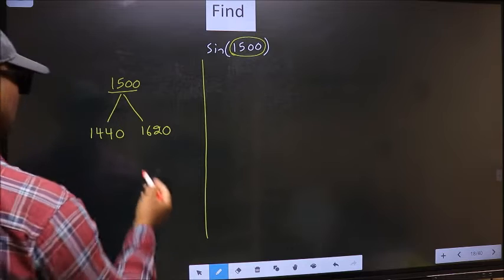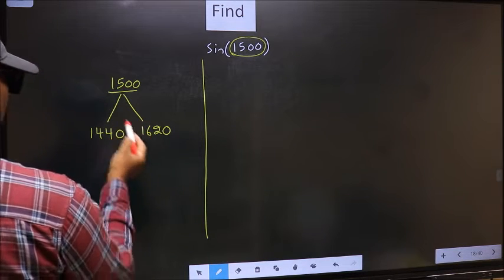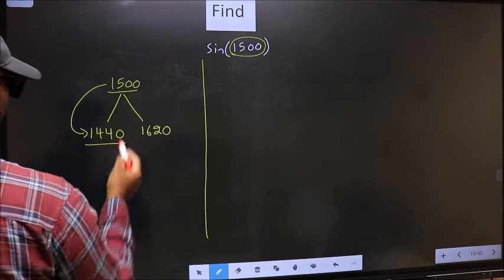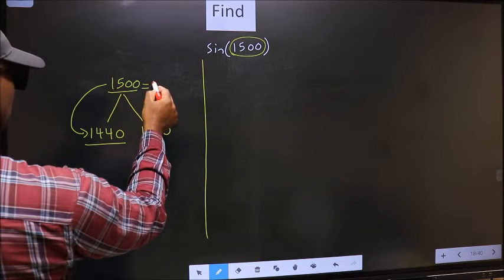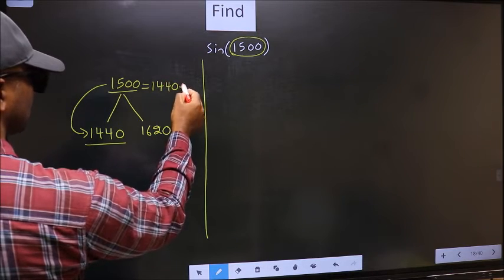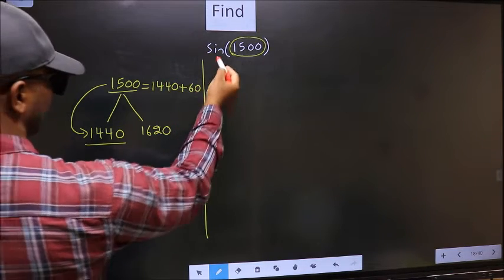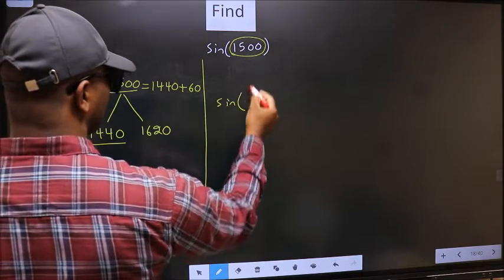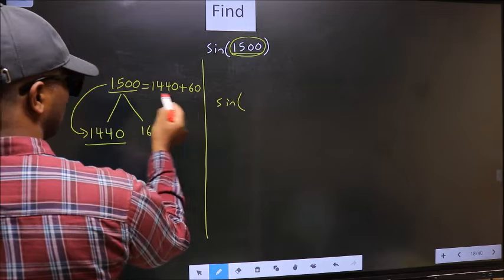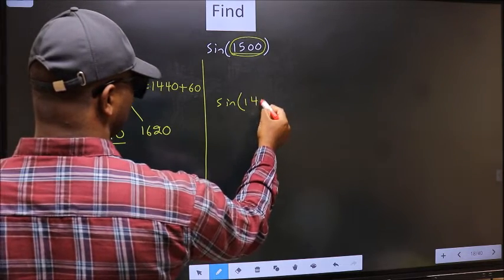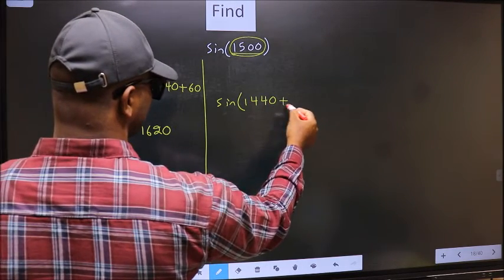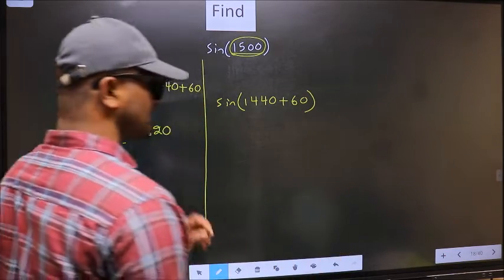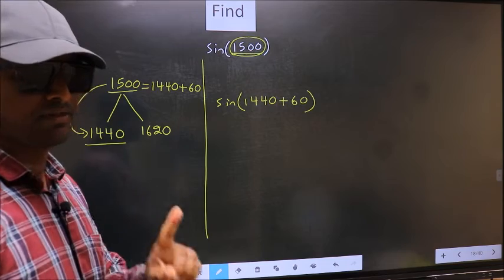Next, this number is close to 1440. So this number should be written as 1440 plus 60. So this will become sine. In place of this, we should write 1440 plus 60. This is your step one.